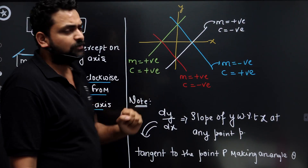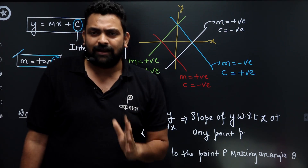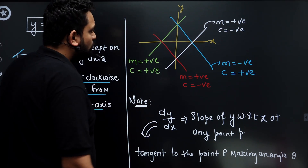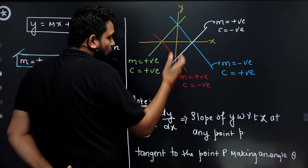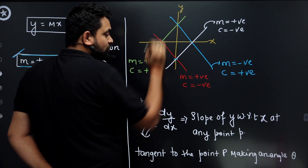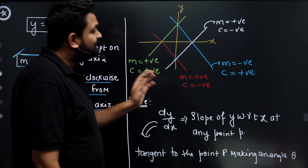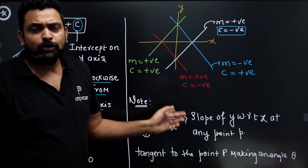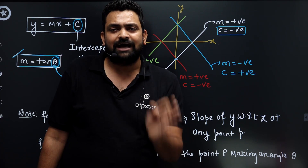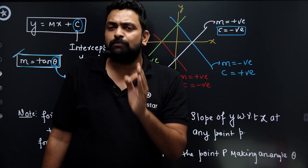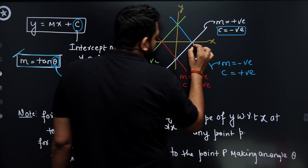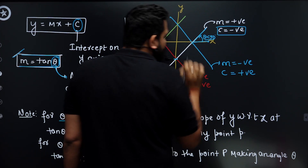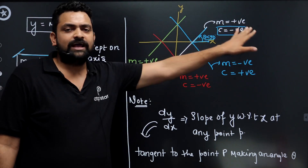Looking at this white line: it is cutting the y-axis below the origin, so c is negative. The angle this white line makes with the positive x-axis is surely less than 90 degrees, so the slope m is positive. Now let's talk about the blue line. The blue line cuts the y-axis above the origin, so c is positive. However, the angle it makes with the positive x-axis is more than 90 degrees, so the slope is negative.